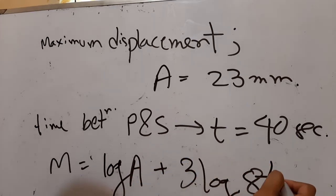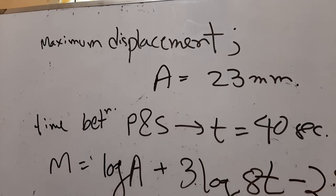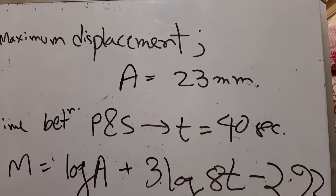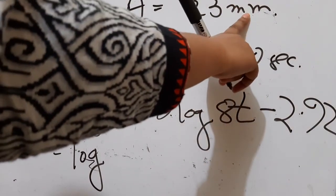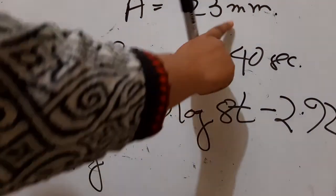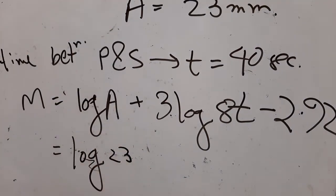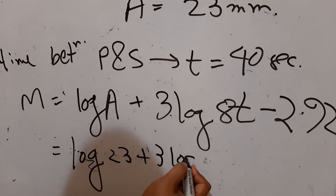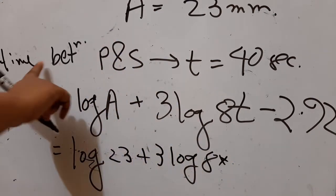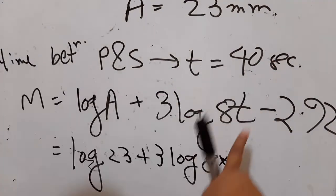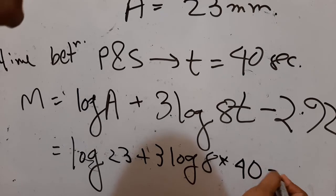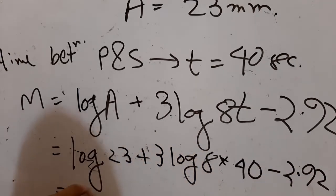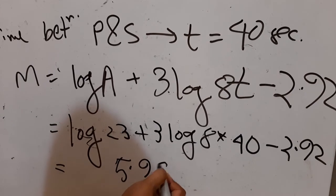Substituting the values: M = log(23) + 3 log 8(40) − 2.92. The displacement is already in millimeters and the time is already in seconds, so no conversion is needed. The calculated answer is M = 5.9600.